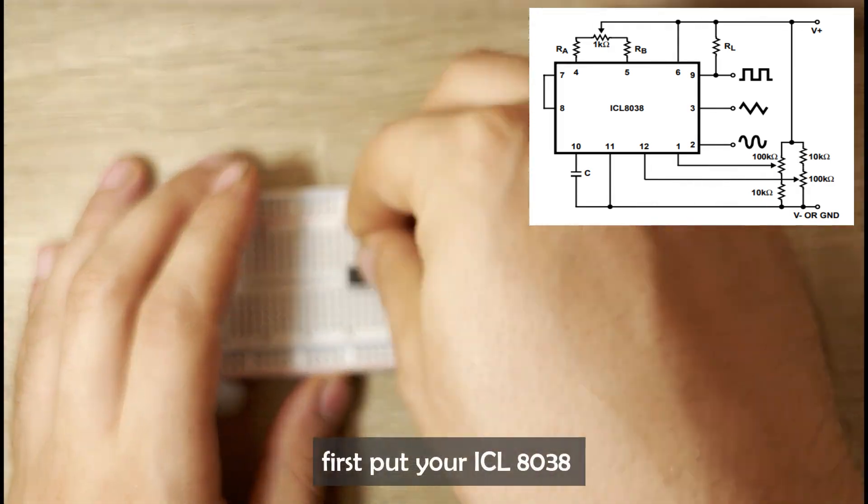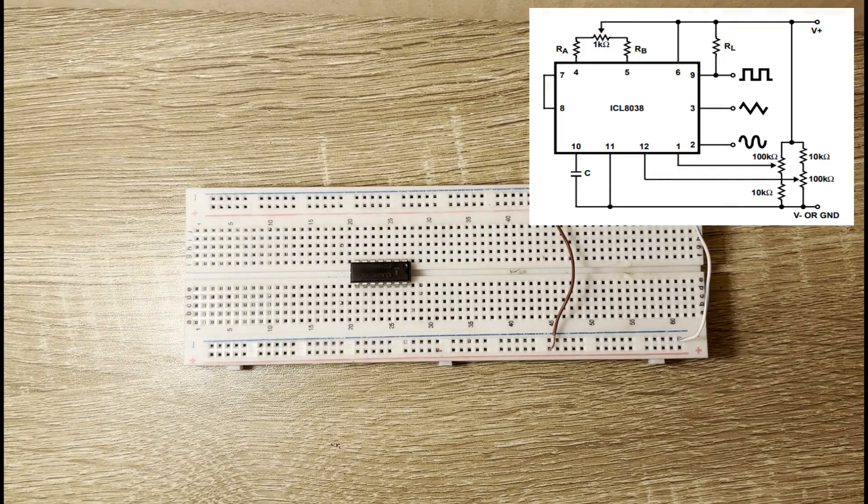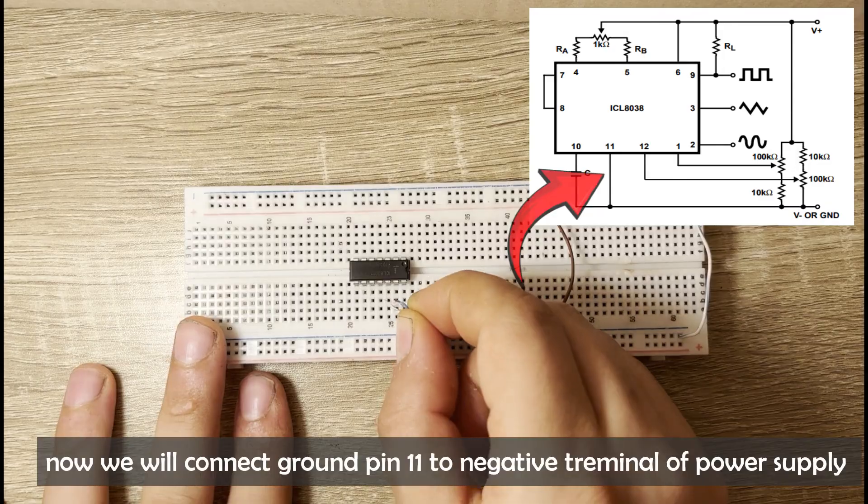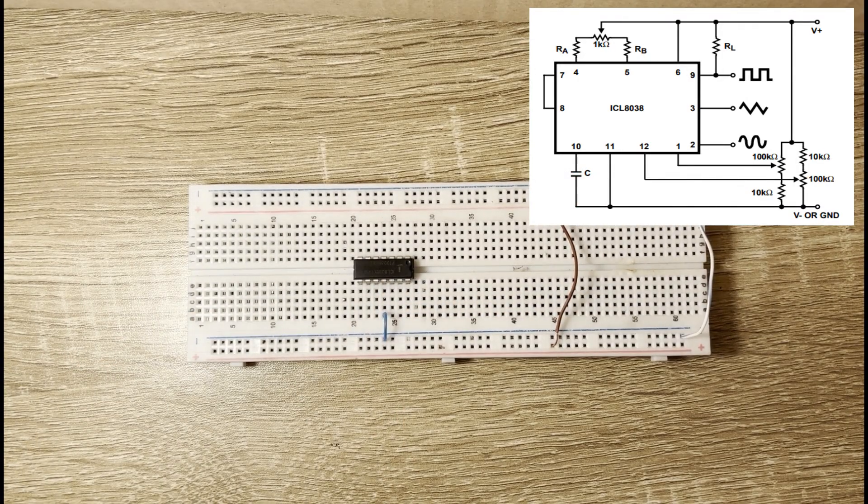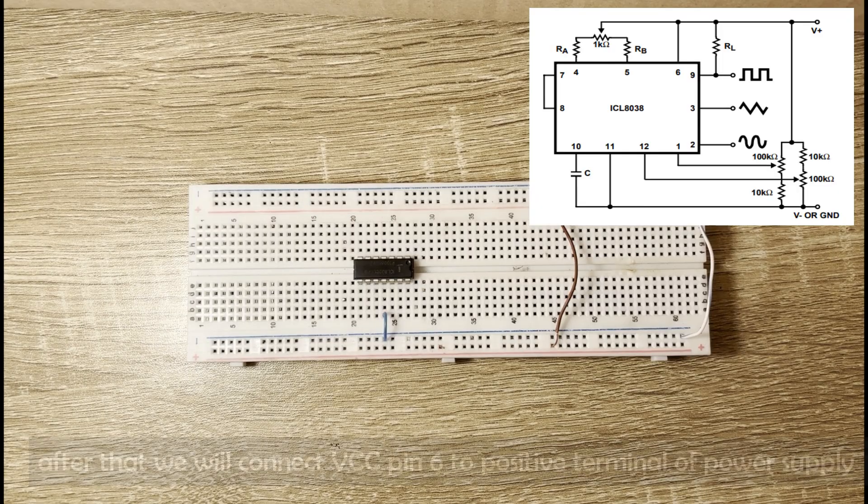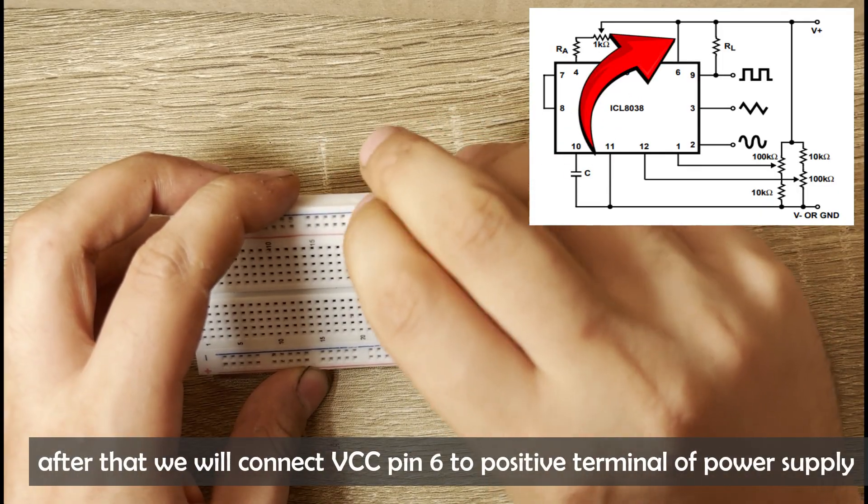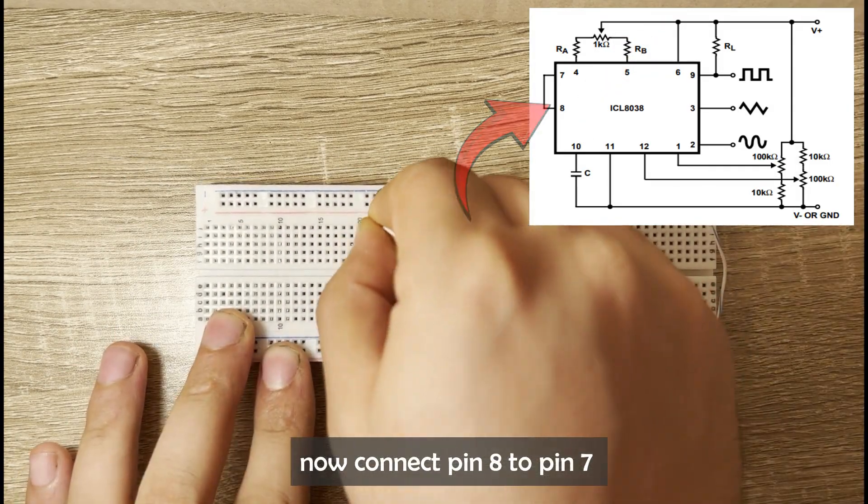First, put your ICL8038. Now we will connect ground pin 11 to the negative terminal of the power supply. After that, we will connect VCC pin 6 to the positive terminal of the power supply. Now connect pin 8 to pin 7.